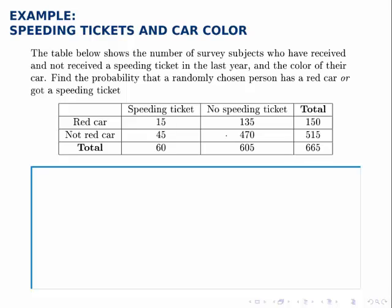So speeding ticket, not speeding ticket, red car, not red car, and again we're given the totals for each row and each column, but if we weren't given those we could easily find them. We're asked to use this table to find the probability that a randomly selected person from this group has a red car or got a speeding ticket in the last year.